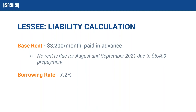For GASB 87, the lessee has to recognize a lease liability. This lease becomes a finance lease, so you're not just going to recognize expense and cash and maybe deferred rent as you've been doing historically — this lease needs to be recognized as a liability. Per the guidance, specifically GASB 87 paragraph 21, the lessee initially should measure the lease liability at the present value of the payments expected to be made during the lease term.